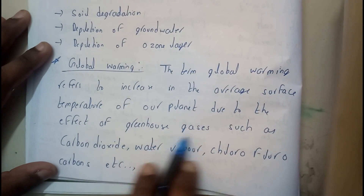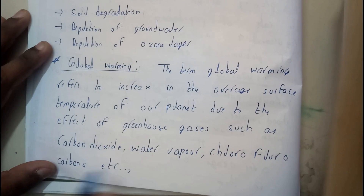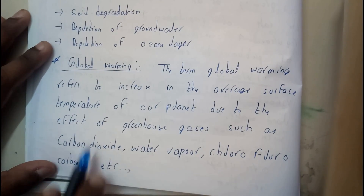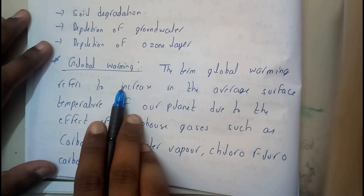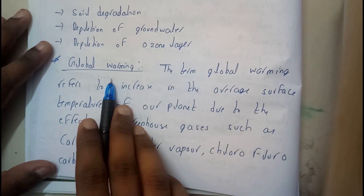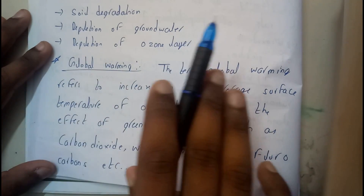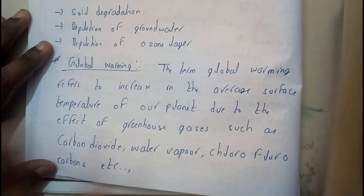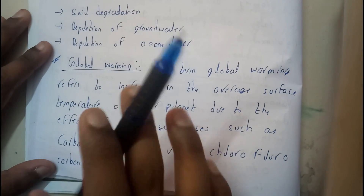Such as carbon dioxide, water vapor, chlorofluorocarbons, etc. These are the main causes of global warming. Global warming is nothing but an increase in the temperature of our planet.